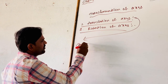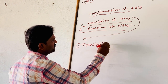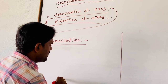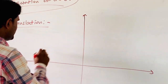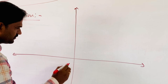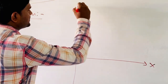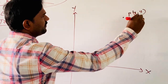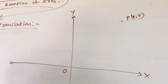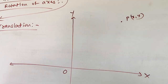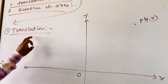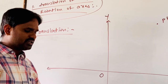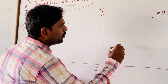What is translation of axis? Let us draw two coordinate axes X and Y. Their intersection is O. Mark a point P(X, Y) on the first quadrant. Without changing the direction of coordinate axes, we are shifting the origin to any other distinct point — that is, we are changing the origin from O to O dash.